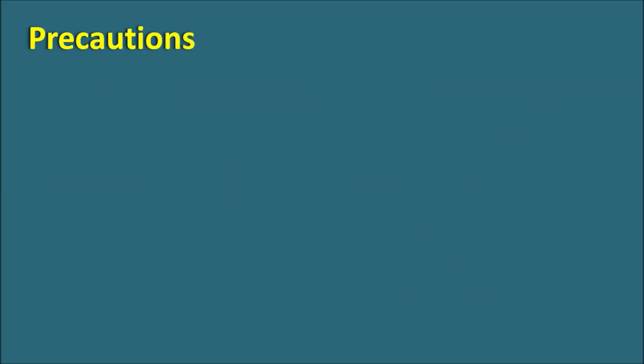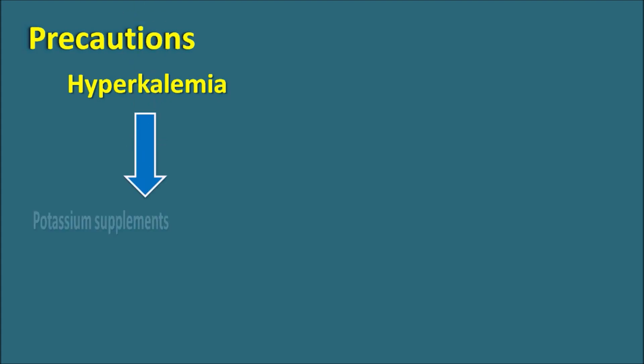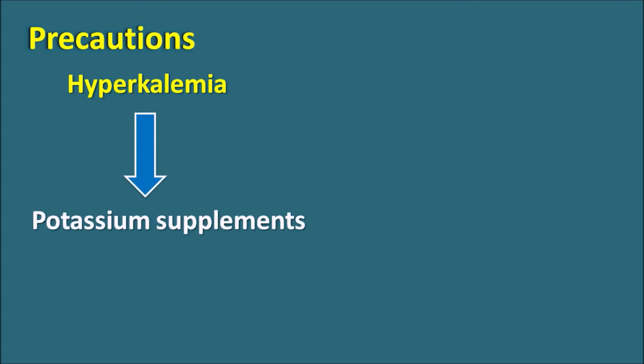What are the precautions? The first precaution is hyperkalemia. Lisinopril can produce renal failure, which results in hyperkalemia. In such conditions, we should not give any potassium supplements or potassium-sparing diuretics, as these should not be combined with Lisinopril because they can produce severe hyperkalemia. In patients who have hyperkalemia or risk of hyperkalemia, Lisinopril should be avoided.